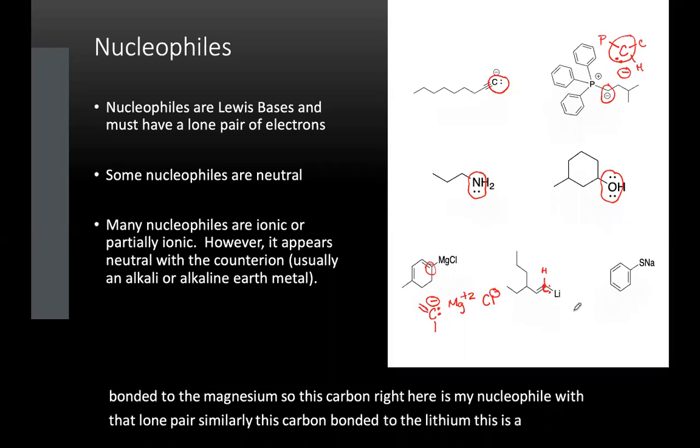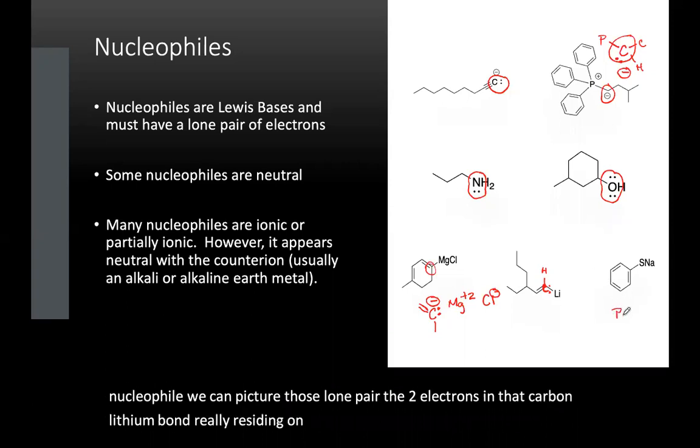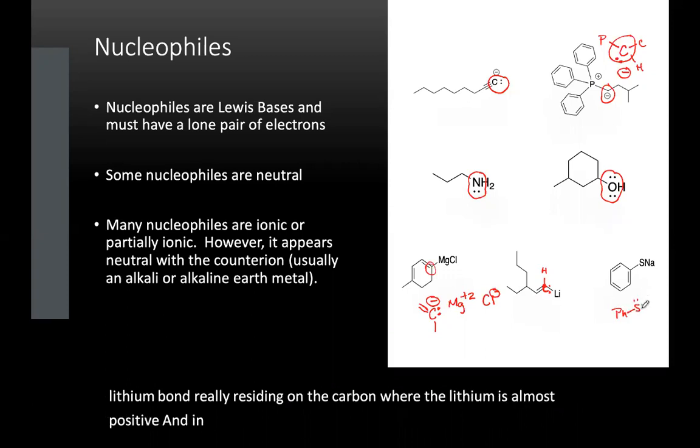We can picture those lone pair—the two electrons in that carbon-lithium bond really residing on the carbon where the lithium is almost positive. And in this case, this is really the sulfur with three lone pairs and a minus charge. This is really an ionic bond but we often draw it like this.